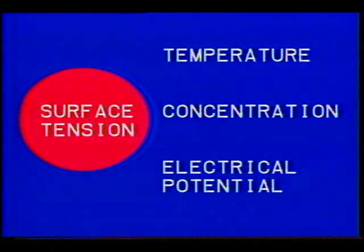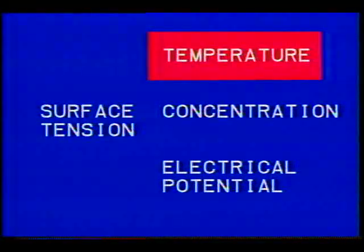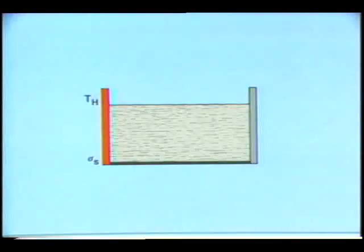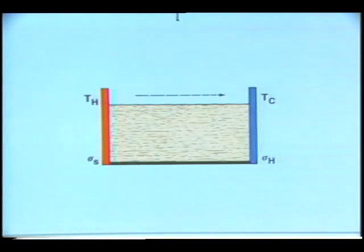Unlike buoyancy-dominant flow, surface tension dominant flow has not been well studied. However, we do know that it is partly a function of temperature and concentration. The present study focuses on the effect of temperature on surface tension: the warmer the fluid, the weaker the surface tension, and conversely, the colder the fluid, the stronger the surface tension.